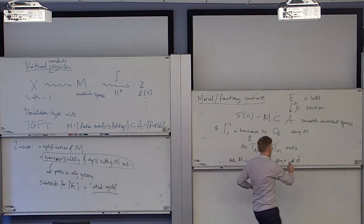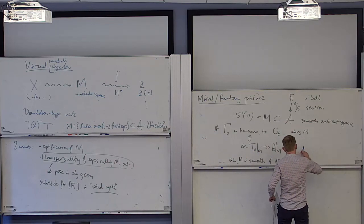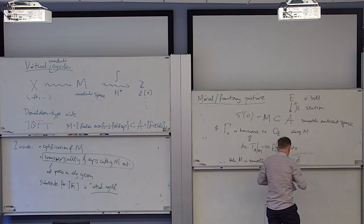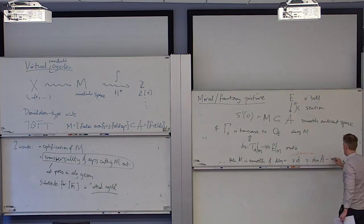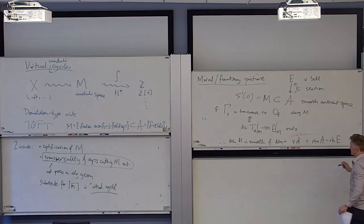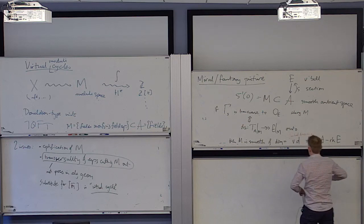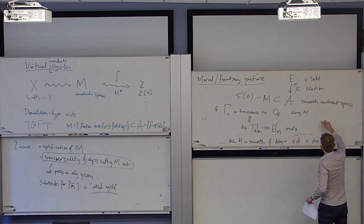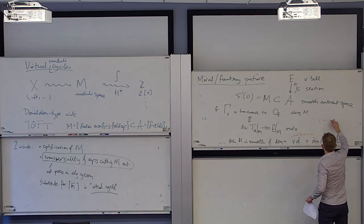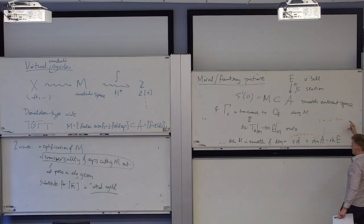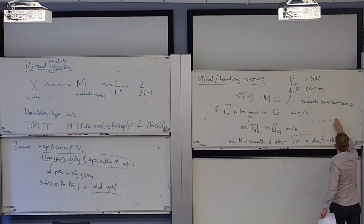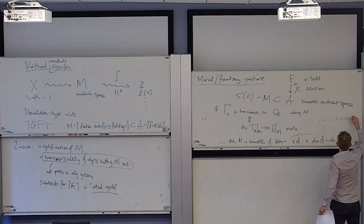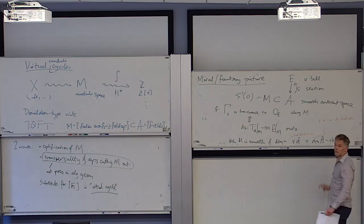In infinite dimensions, where this is infinity minus infinity, we hope to be in the situation that DS is Fredholm. If DS is Fredholm, you replace this by the Fredholm index: the rank of the kernel of DS minus the rank of the co-kernel of DS. The kernel of DS is basically the tangent space to M, and the co-kernel I'll interpret in a moment. In the case where DS is onto, you just have the rank of the kernel, which is homotopy invariant — a finite number.